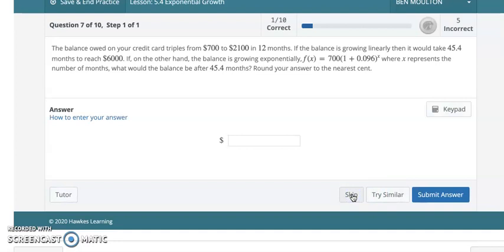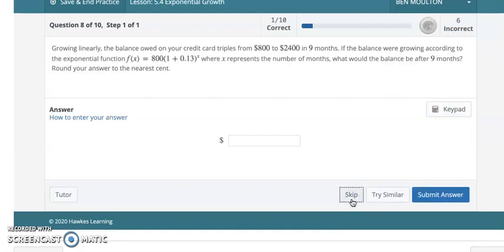So the balance owed on your credit card triples from $700 to $2,100 in 12 months. We did one like this already. For this one, I believe we are going to plug in 40, yes, plug in 45.4 in for x. I was checking to see if we needed to subtract 12 from it. You do not, because initially you're already at $700 and that's what's in the formula here. Now, if I had $2,100 in here instead of the $700, then yeah, I would have taken 45.4 minus the 12 and that would have been the x value. But turns out we don't have to worry about that. So I would just plug in 45.4 in for your x and that will take care of that one. I'm moving on. But if you have questions, let me know.